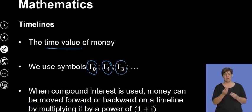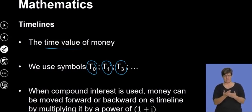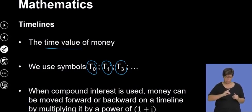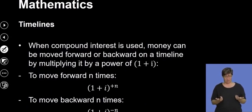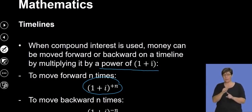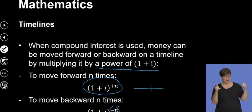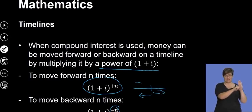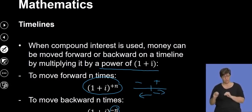When compound interest is used, money can be moved forward and backwards on a timeline, depending on the interest and whether you are depositing or withdrawing. When moving forward, you multiply by (1 + i) to the exponent of a positive n. When moving backwards, the exponent becomes negative n. On a number line, going right is a plus and going left is a minus — hence the positive and negative.